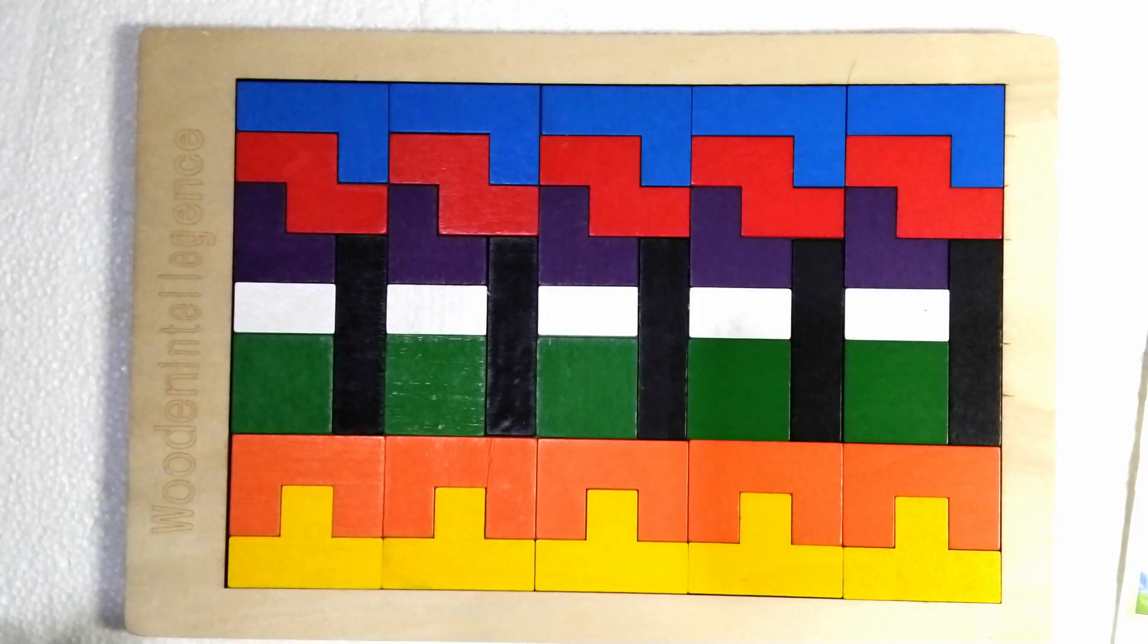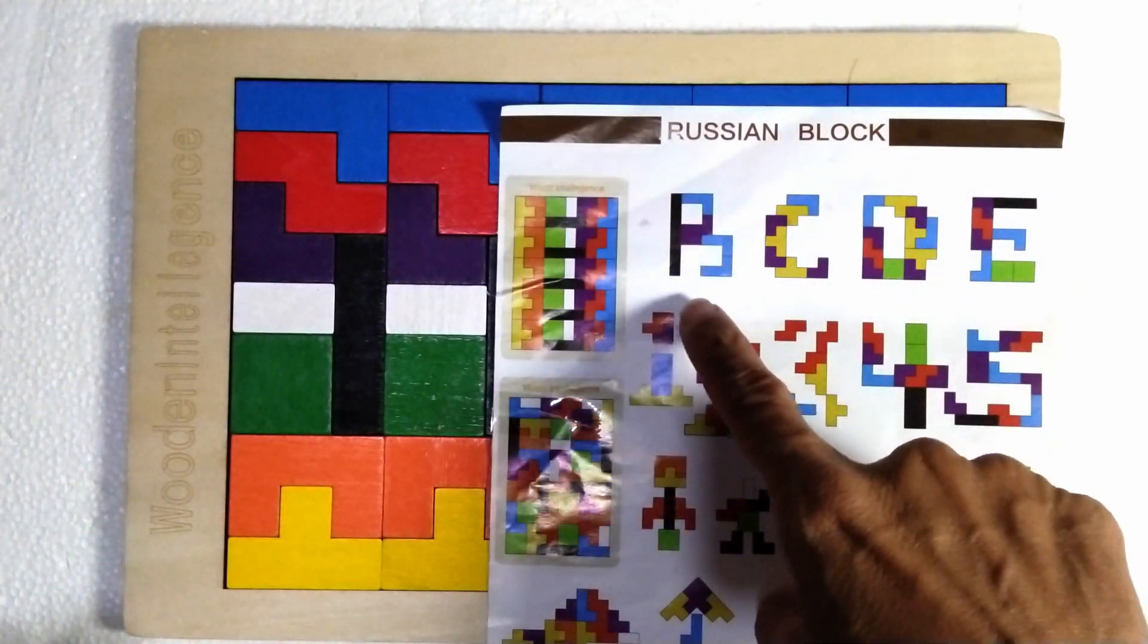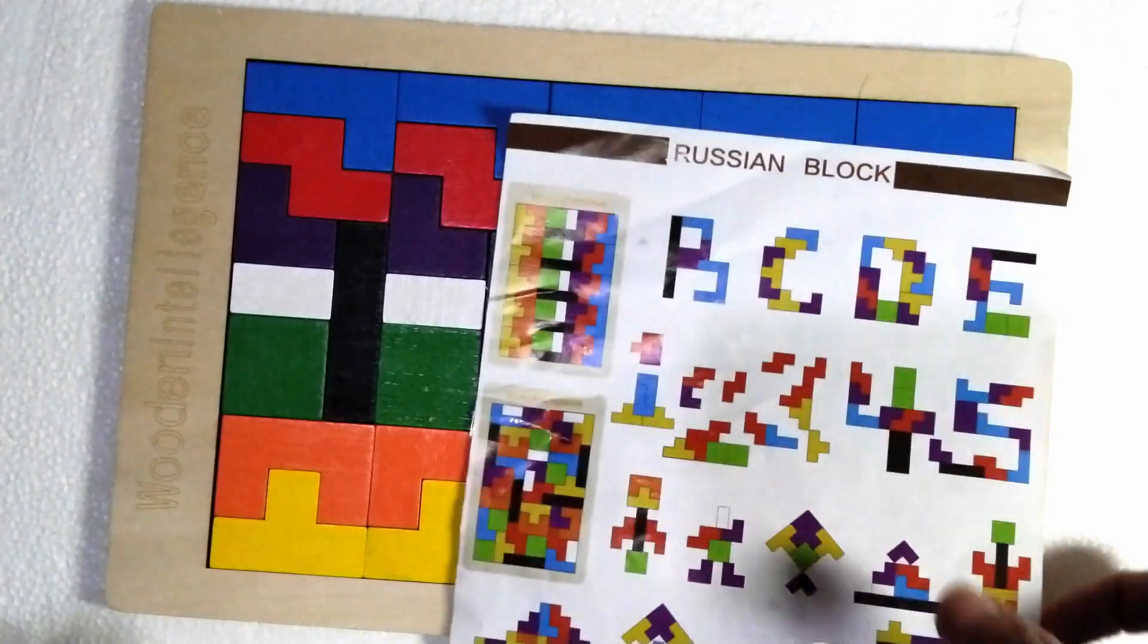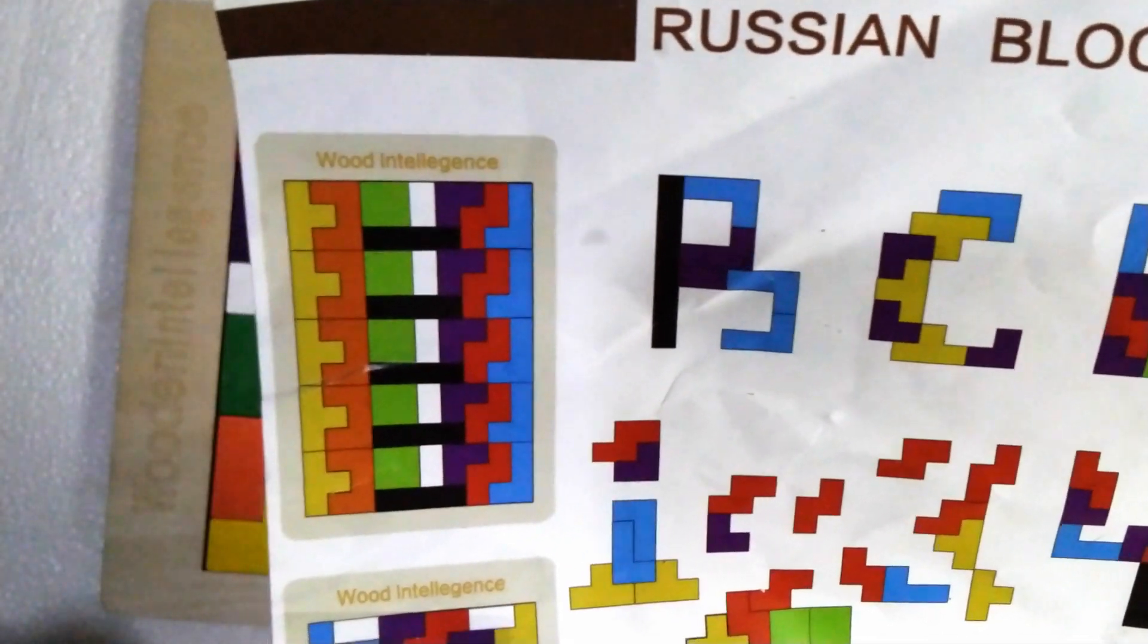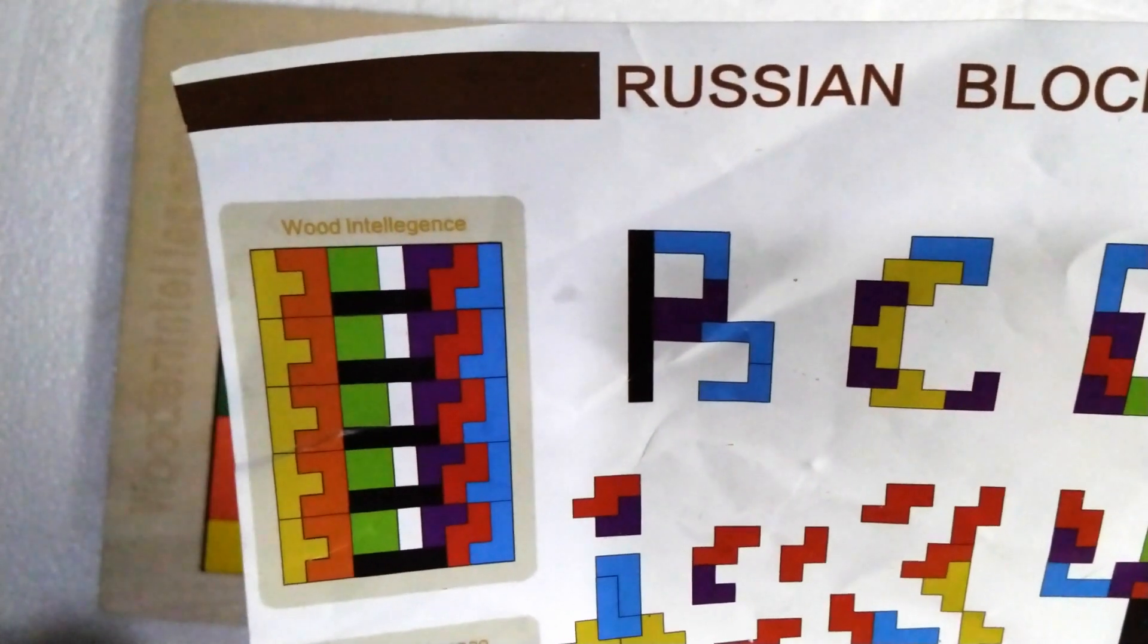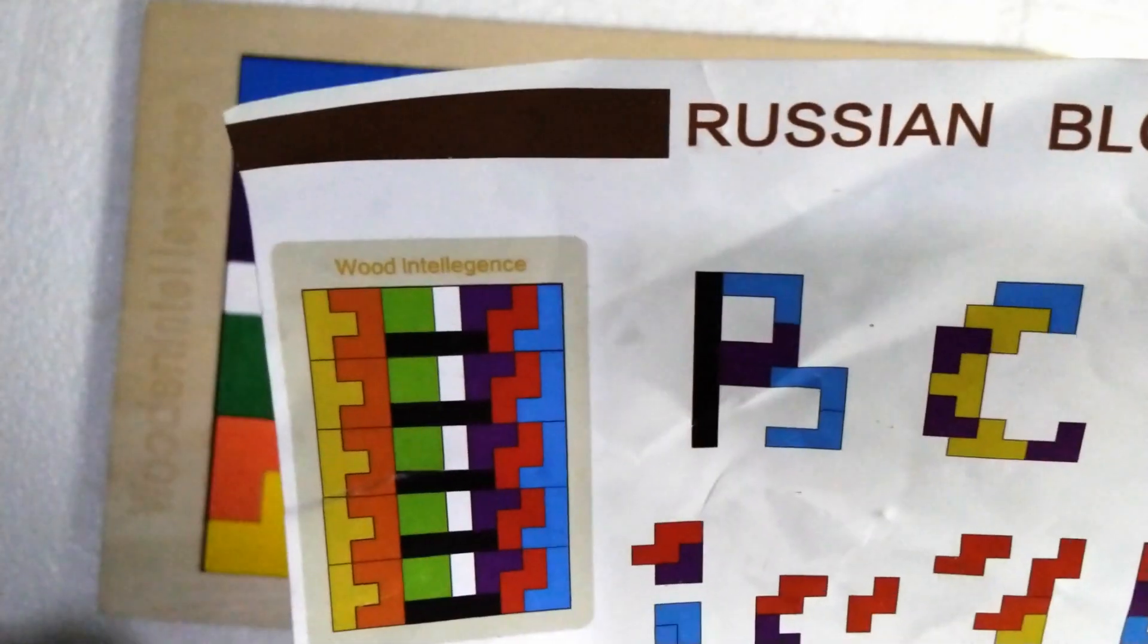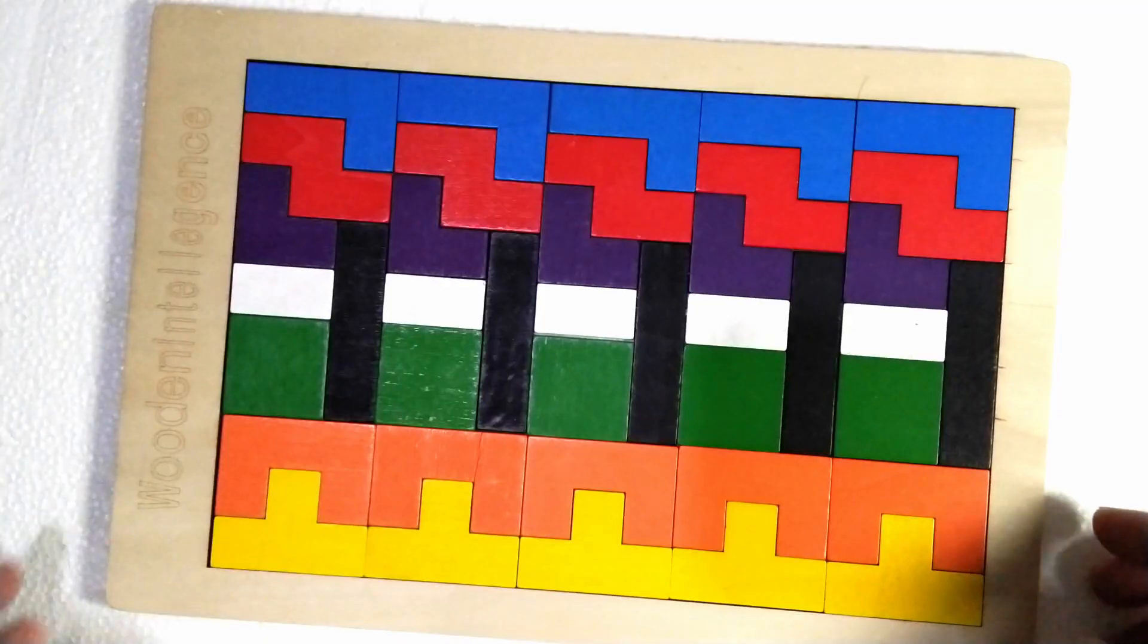Okay my dear, now we will set the letter B using our Russian blocks or wooden intelligent toys. You can see this model as a reference, we have a B model here. We would like to make the B shape so you can try at home and follow our guide.